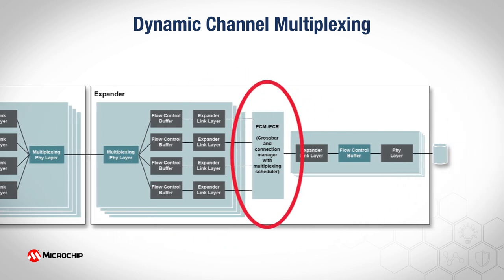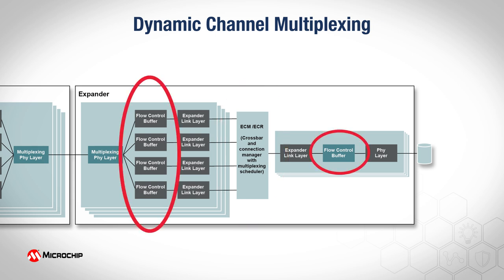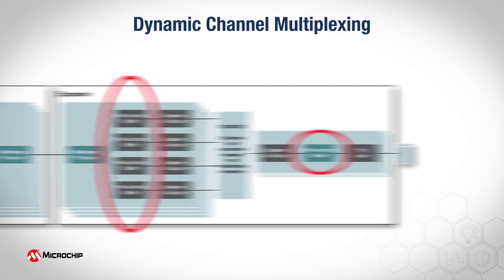The expander connection manager and crossbar switch functions are increased in size to accommodate four times the connection pathways from each multiplexed PHY. Additionally, flow control buffers are implemented to prevent overflowing connection pathways with slight and/or temporary bandwidth mismatches in the connection pathways.